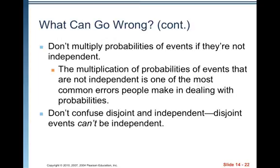So again, next chapter we're going to talk about how do we find an and probability of two events that are not independent. So we will get to that, but for today, for or they have to be disjoint, for and they have to be independent.